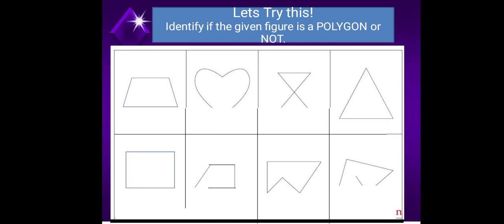Let's try this. Identify if the given figure is a polygon or not. So we have here the first image. As we can see, it is a closed figure. And it has sides with straight lines. So there's no curves in the first image. Therefore, it is a polygon.